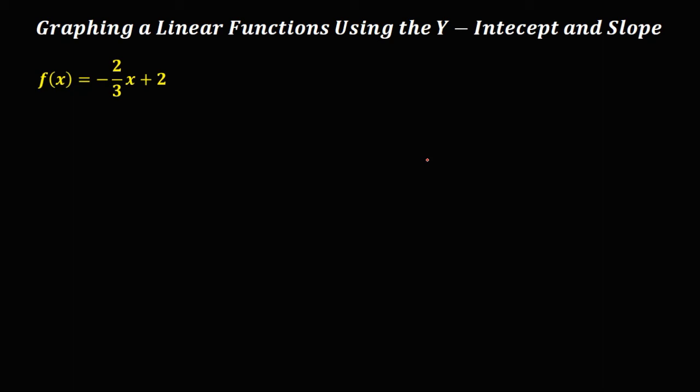So let's have this one. Graphing linear functions using the y-intercept and the slope. We have this given function f(x) equals negative 2 over 3x plus 2.